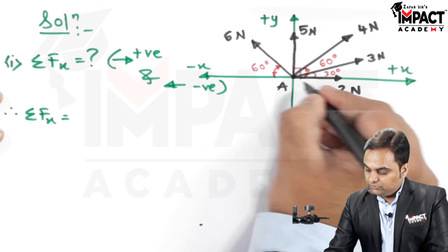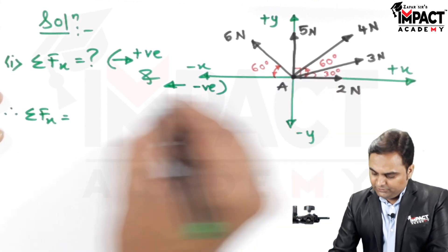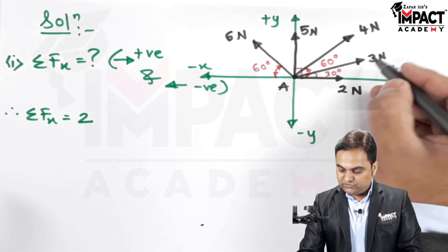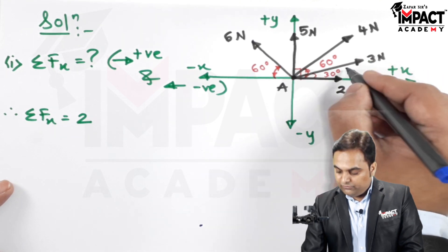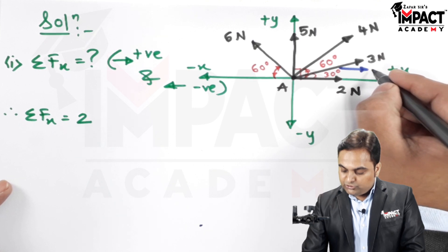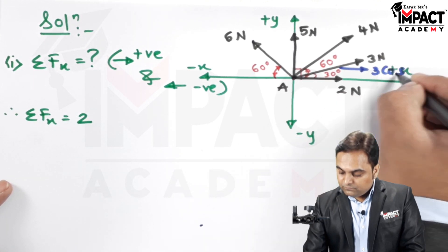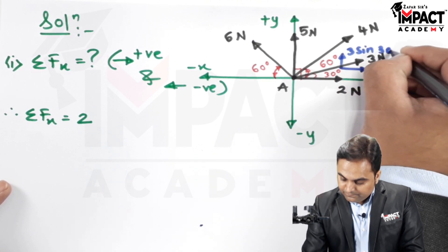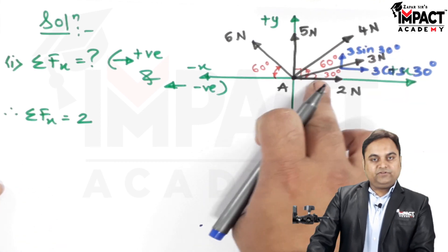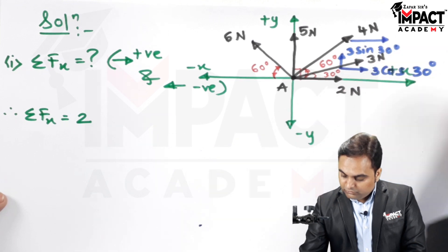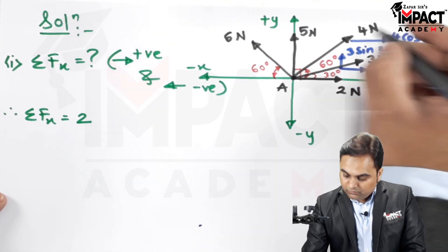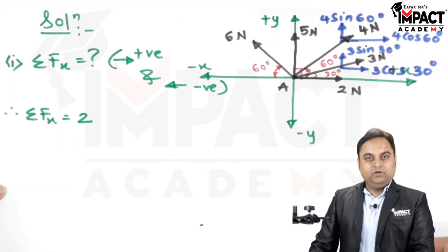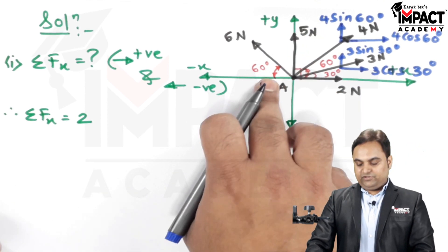Summation Fx: the 2 newton force is purely horizontal acting towards the right, so it is positive. For all inclined forces, we need to resolve them. The 3 newton force at 30 degrees gives a horizontal component of 3 cos 30 and vertical component of 3 sin 30. The 4 newton force at 60 degrees gives a horizontal component of 4 cos 60 and a vertical component of 4 sin 60. The 5 newton force is purely vertical.